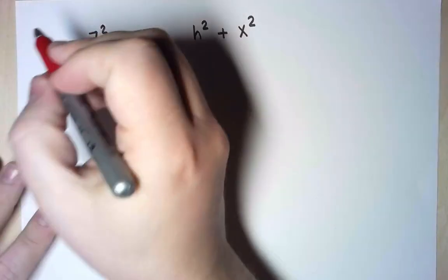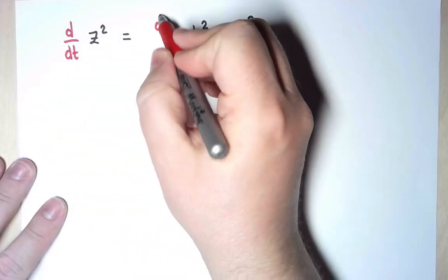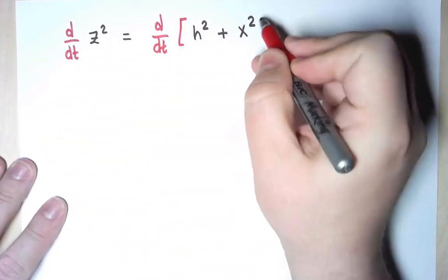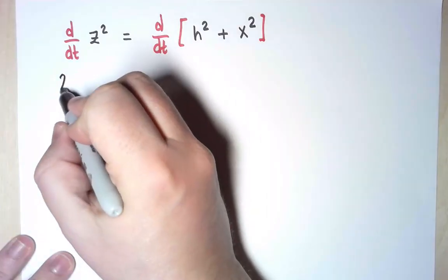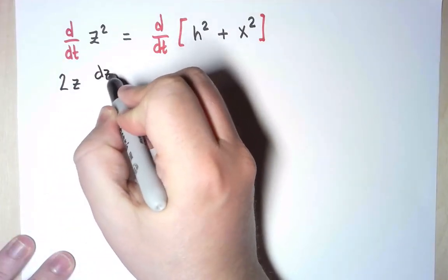The derivative of the left-hand side is equal to the derivative of the right-hand side. And now let's take the derivative carefully. On the left-hand side, using the chain rule, since z is a function of t, I'm going to get 2z dz/dt.